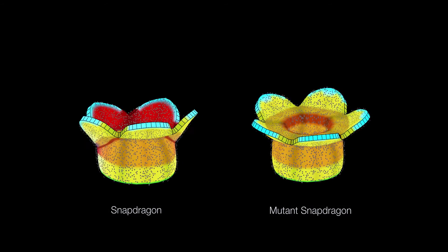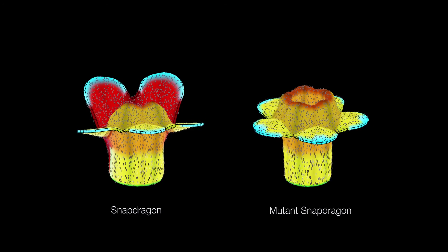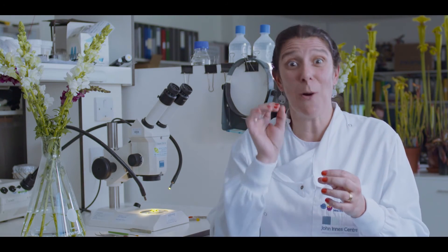Mutations that change the pattern of conflict develop different shapes. And we can now use the same principles of conflict to better understand how animals develop as well. Now we're starting to understand how these conflicts work, we can combine them in totally new ways to produce shapes that don't even exist in nature. And these can inspire artists to come up with fresh designs.